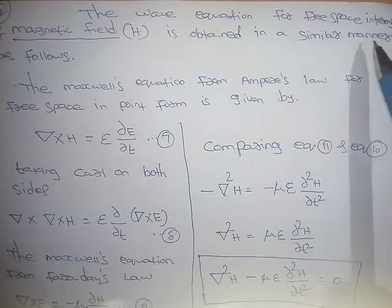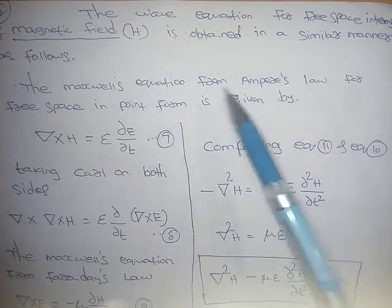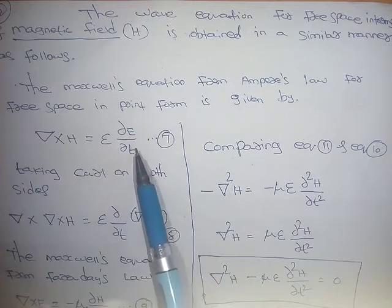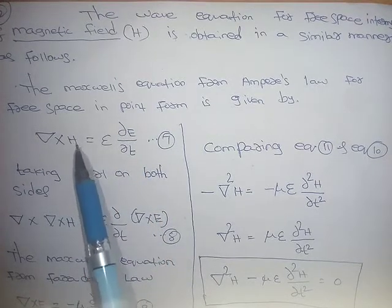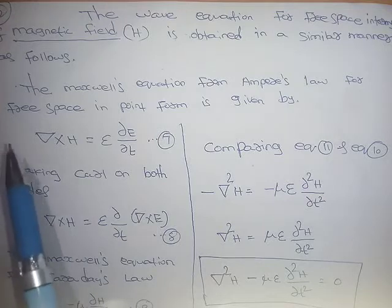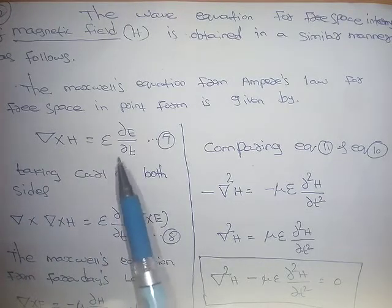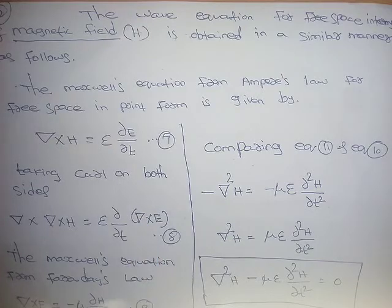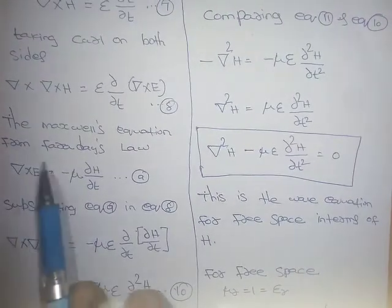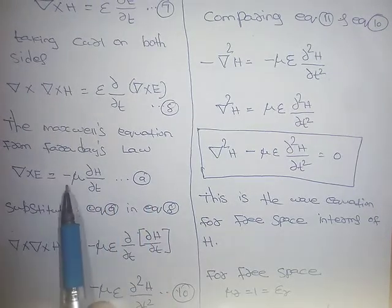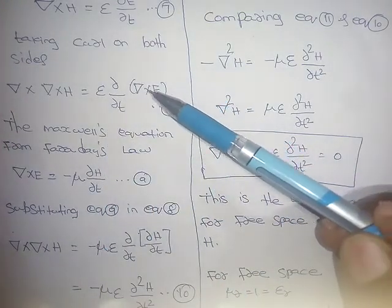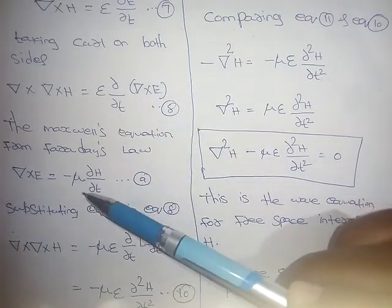Now we derive the wave equation in terms of the magnetic field. Starting from Maxwell's equation: del cross H equals ε dE/dt. Taking the curl of both sides and applying the del cross E operator, we use Faraday's law: del cross E equals minus μ dH/dt, and substitute it in.